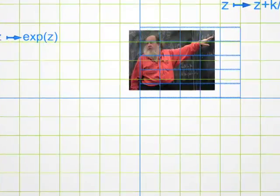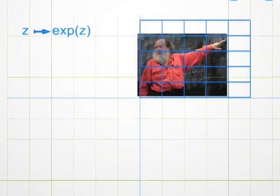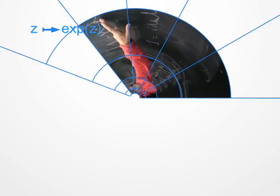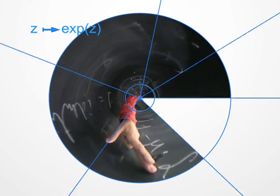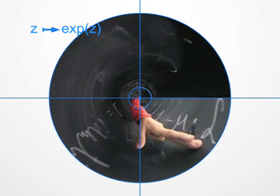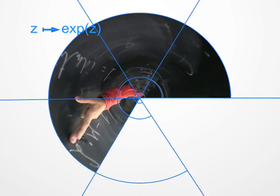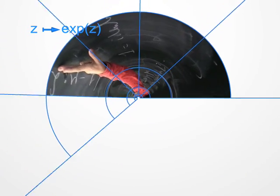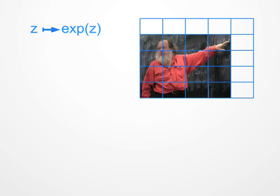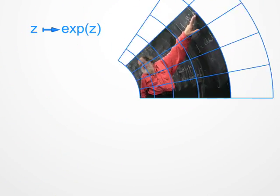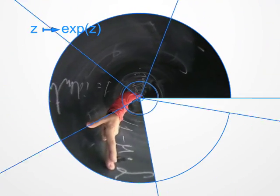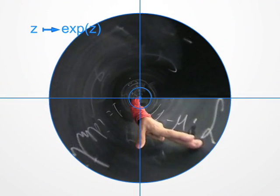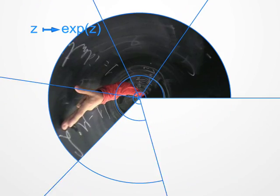Indeed, with complex numbers, one can do quite a lot. One can even take the exponential, if you know what this means. But even if you don't know, look at the treatment I have to suffer from the exponential. Has my head disappeared? No. If you looked through a microscope near the origin, you could see my beard.